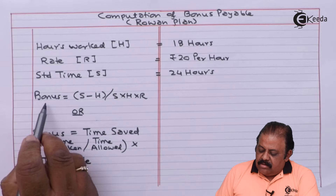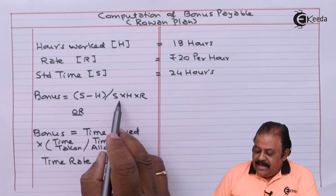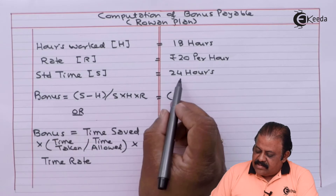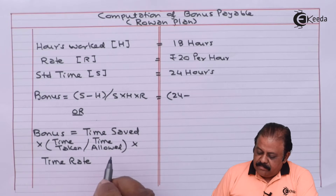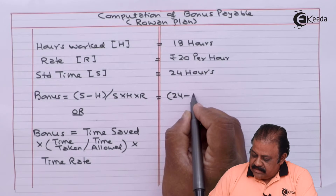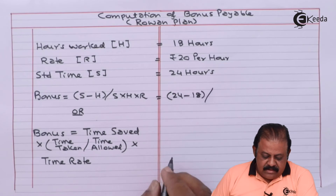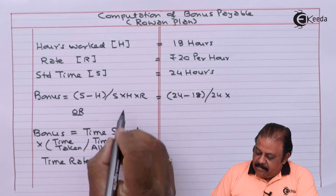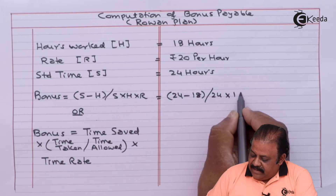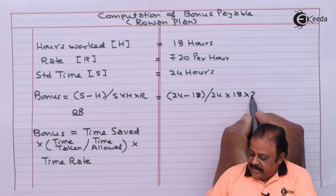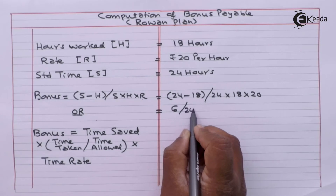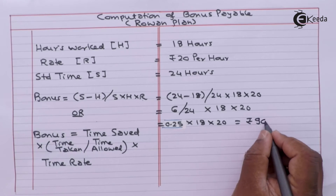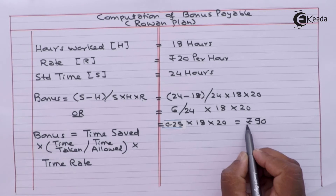We can use this formula. Bonus equals S minus H divided by S, multiplied by H multiplied by R. That is: 24 minus 18, divided by 24, multiplied by 18, multiplied by 20. The bonus payable will be Rs 90.